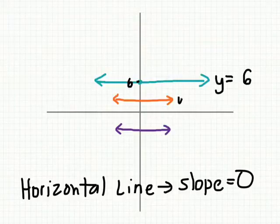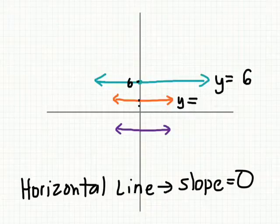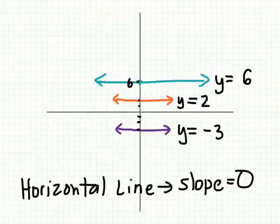This one would be y equals, where's the intercept? Where does this line intercept? Zero, one, two. Good. And what would be the equation of this line? It's going to be negative, so negative three. Y equals negative three.